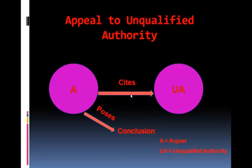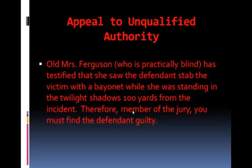The appeal to an unqualified authority is when an arguer cites an authority who is not qualified to support the claims he is making. Here is an example: Old Mrs. Ferguson, who is practically blind, has testified that she saw the defendant stab the victim with a bayonet while she was standing in the twilight shadows, a hundred yards from the incident. Therefore, members of the jury, you must find the defendant guilty.